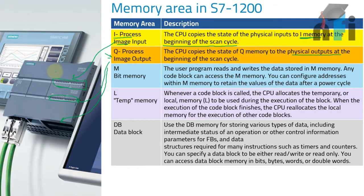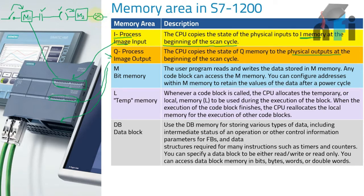What happens inside the PLC? First, your inputs are stored in memory (M1). By this memory, the logic is solved — if this input is true, this output will be true. The status of these outputs is stored in another memory (M2). So switches give information to M1, the logic is solved, the output is stored in the output memory, and this memory gives the output to the output terminals, which will turn on the indicator.